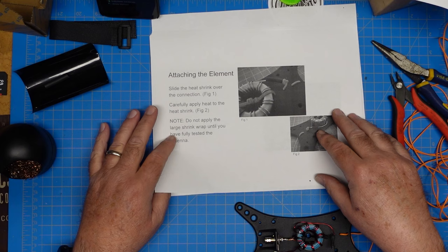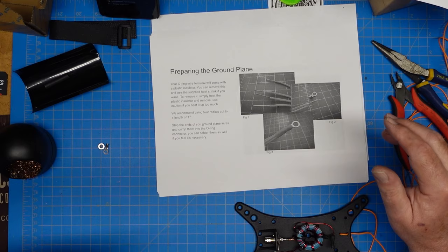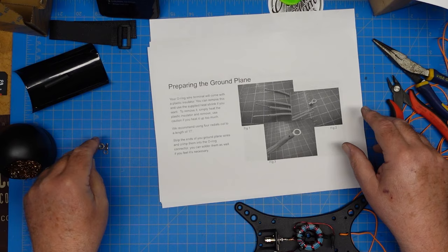Our element is now soldered on, we have our strain relief knot, and all our slack pulled out. That is what I've got. Chuck mentions don't apply the large heat shrink to the whole thing until we've got it tested.